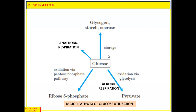Glucose is the basic substrate for both aerobic and anaerobic respiration. It acts as a fundamental unit of energy. Glucose can also undergo the pentose phosphate pathway, which produces ribose sugar.